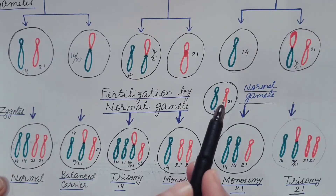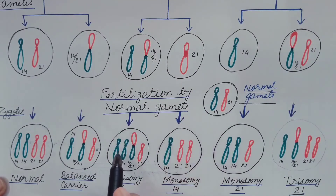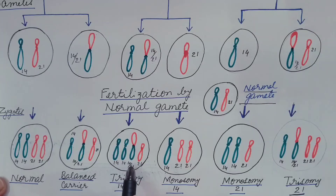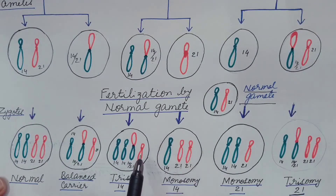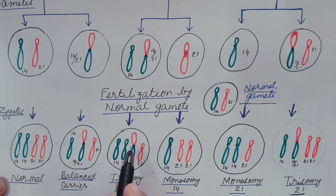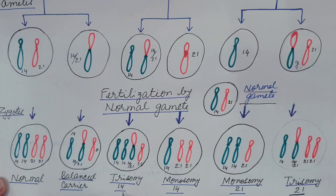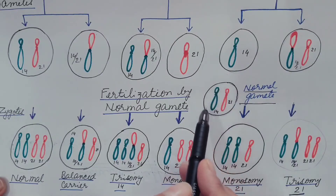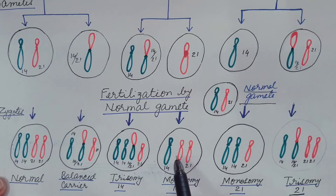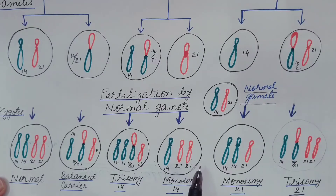If the normal gamete fuses with the third gamete, the offspring will have two copies of normal chromosome 14, one copy of normal chromosome 21, and one 14-by-21 chromosome. This results in three copies of chromosome 14 and two copies of chromosome 21 — one extra copy of chromosome 14 — giving 47 chromosomes total. This is known as trisomy 14. If the normal gamete fuses with the fourth gamete, there will be two copies of chromosome 14 but only one copy of chromosome 21, giving 45 chromosomes total — this is monosomy 14.